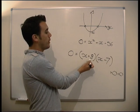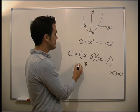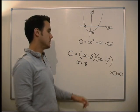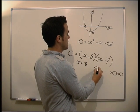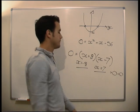How do I make this bracket zero? What plus 8 equals zero? Minus 8. So x could equal minus 8. What minus 7 equals zero? 7. So x could also equal 7. There are our solutions.